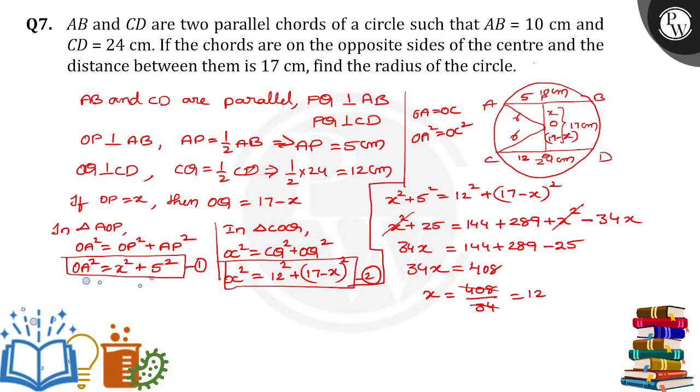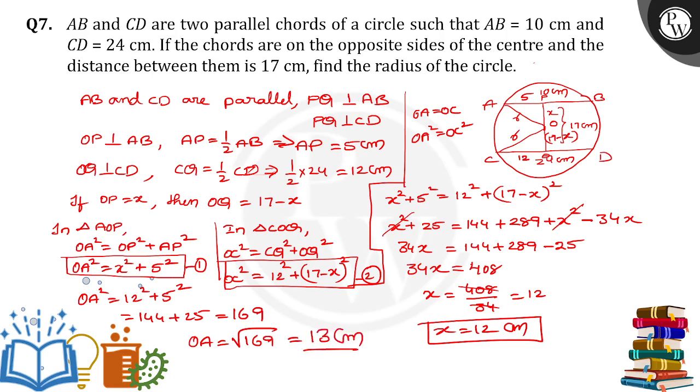If X is equal to 12 centimeters, substitute in equation 1. We will get OA square is equal to 12 square plus 5 square, that is 144 plus 25, we will get it as 169. So OA is equal to square root of 169, the radius of the circle is equal to 13 centimeters. Thank you.